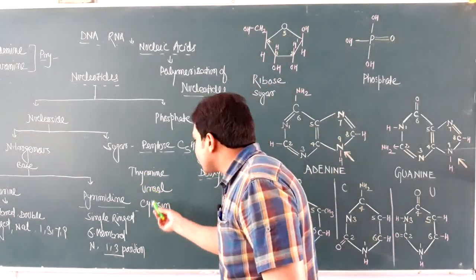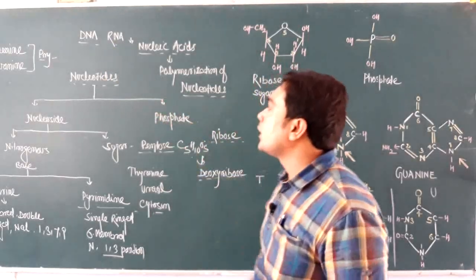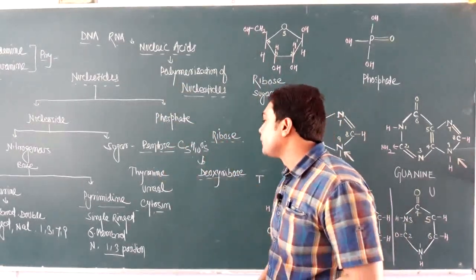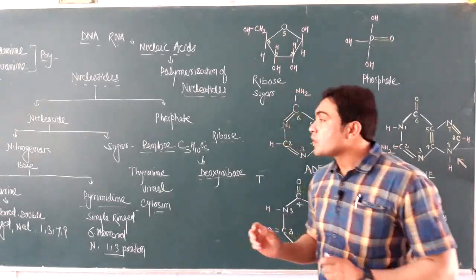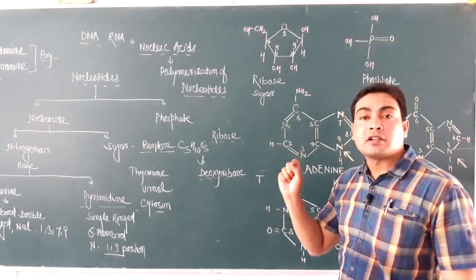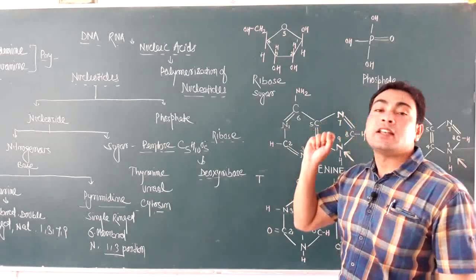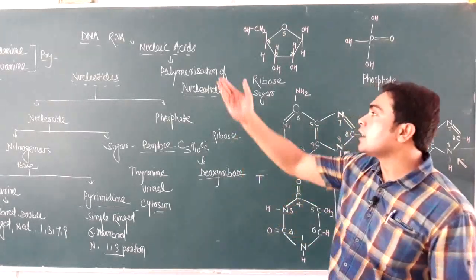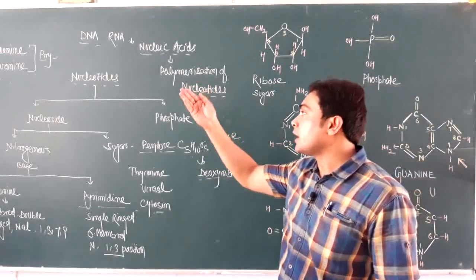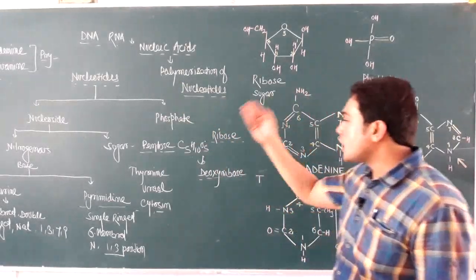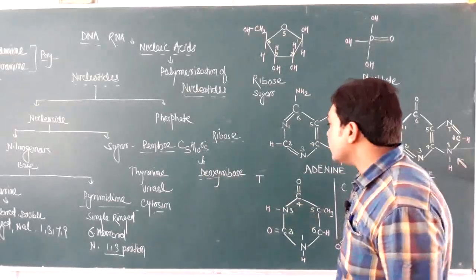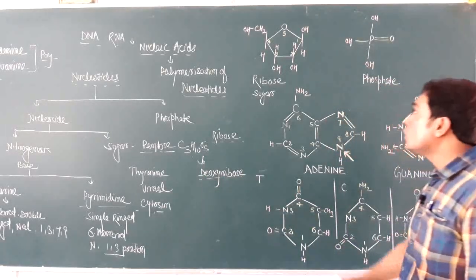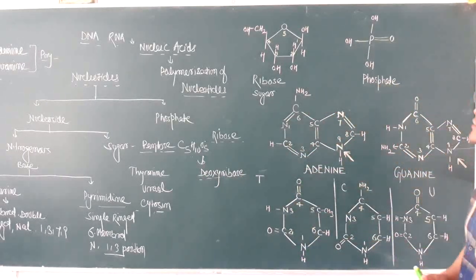Thymine, uracil, cytosine, adenine, and guanine are the nitrogenous bases, and they are always written in abbreviated form using their initial capital letters: adenine as A, guanine as G, thymine as T, uracil as U, and cytosine as C.